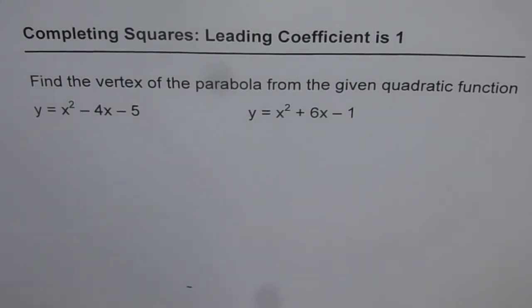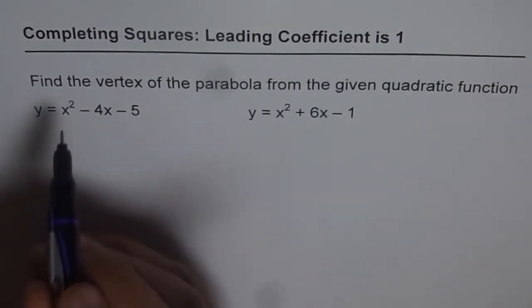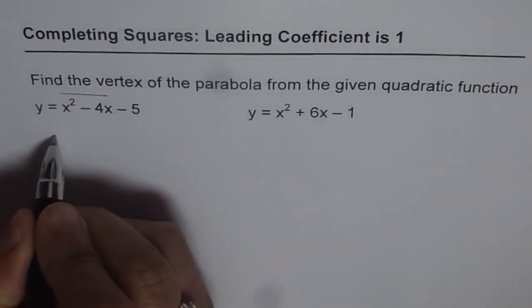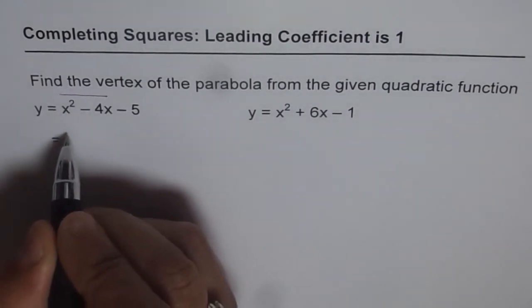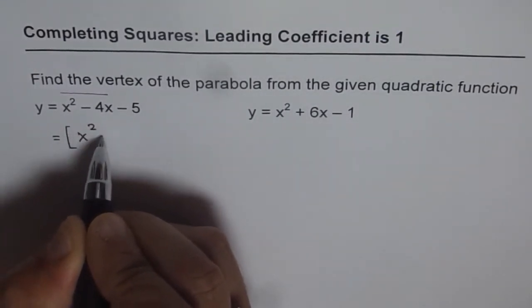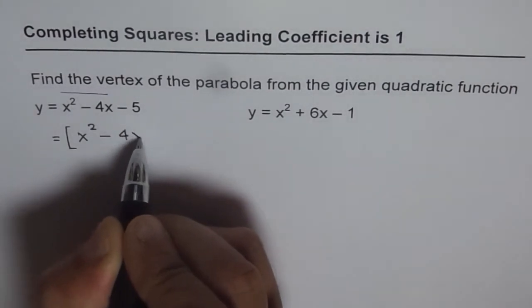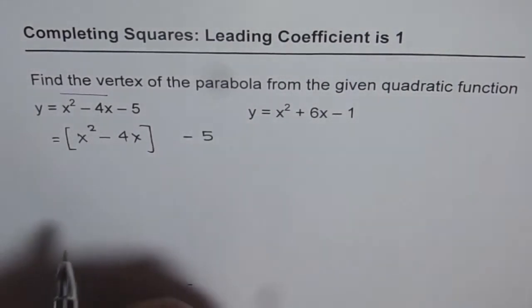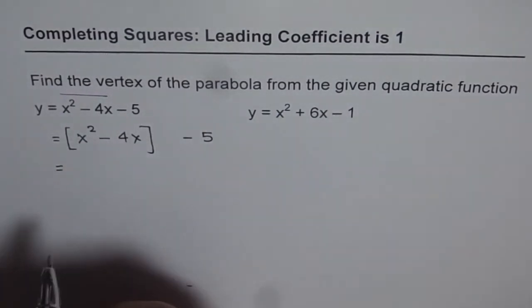Now, what we really do is, we consider the first two terms and keep the third one aside. Remember that part first. So let me write these first two terms in a square bracket to show you that we are actually dealing with these two terms, x squared minus 4x, and we will keep the third term aside. That is the first part.